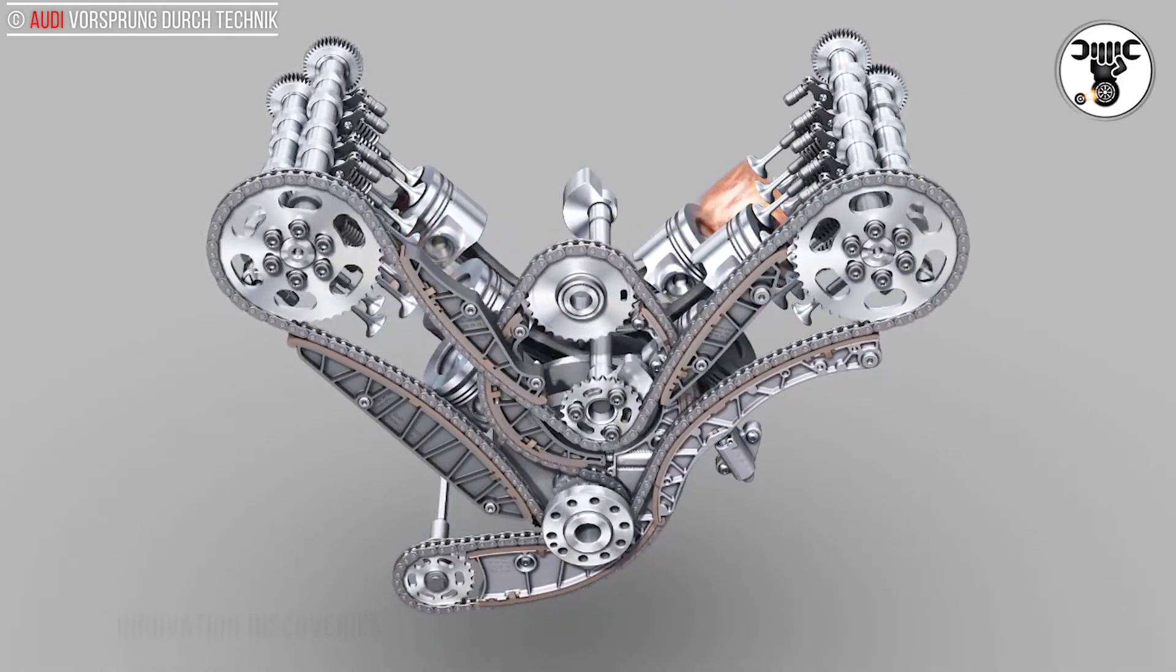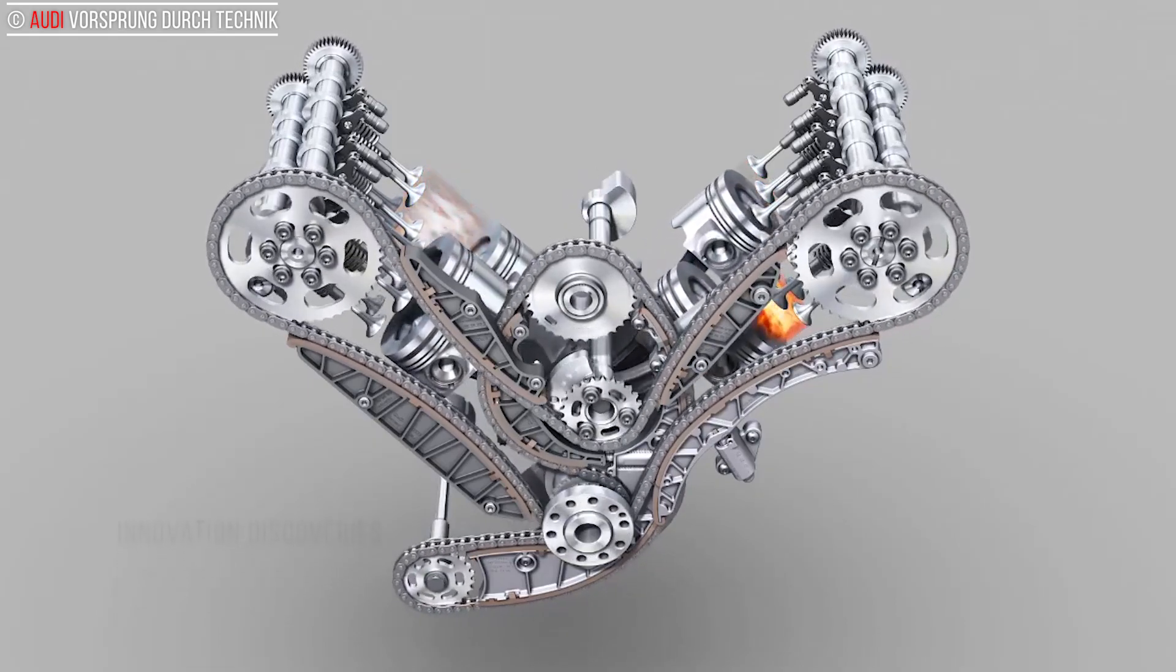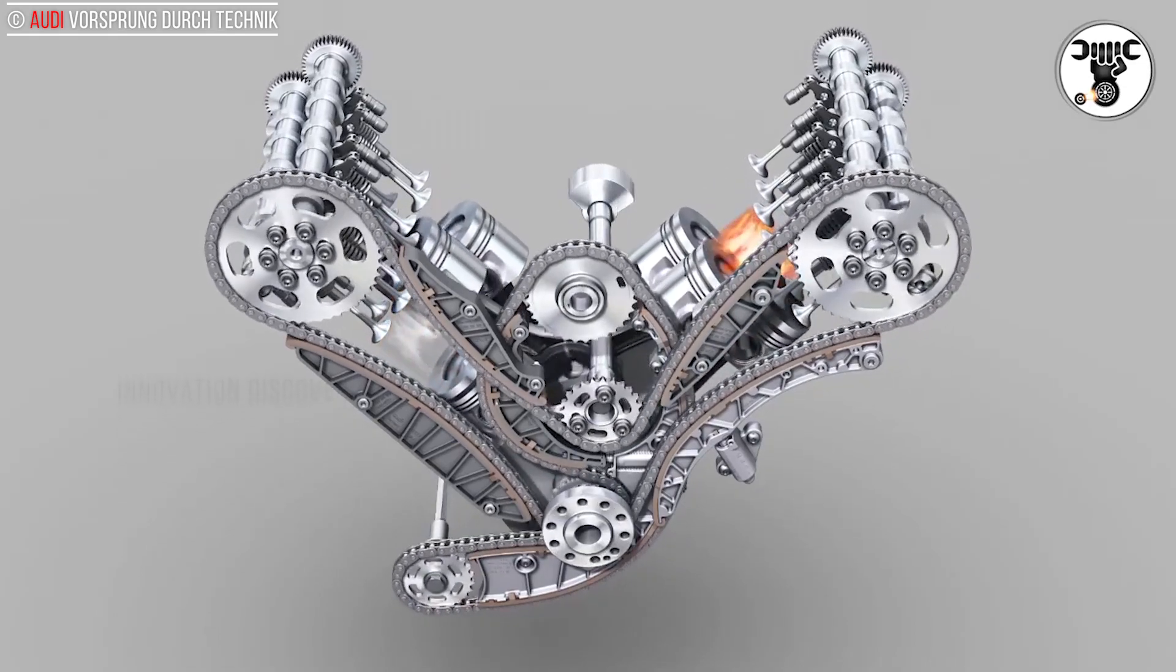At work in each Audi V6 engine with its 90-degree cylinder angle is a single balance shaft, arranged inside the V.